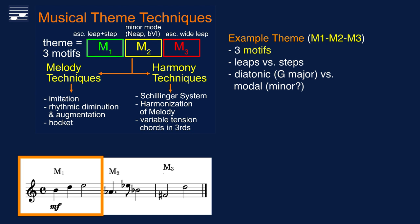M1 is an ascending leap followed by a step, and you will see how this is harmonized in various modal scales on root G.